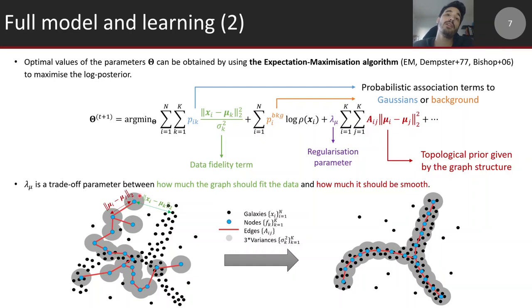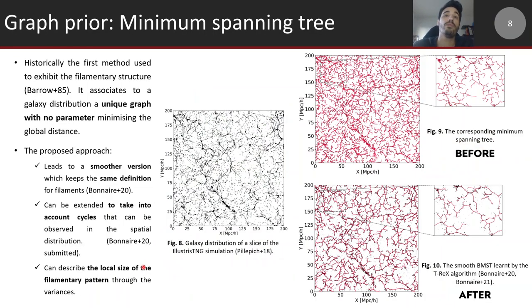One point is that you have to link together the Gaussian clusters because it is a prior distribution and you have to choose a graph construction. In our work we've been using the minimum spanning tree because it has a very long history in cosmology and interesting features from a mathematical point of view: it associates to a given set of data points a unique graph with no parameter and is scale-free, minimizing the total Euclidean distance. Here you have a galaxy distribution from the Illustrious TNG simulation and the corresponding minimum spanning tree.